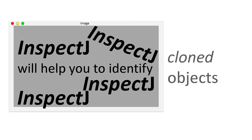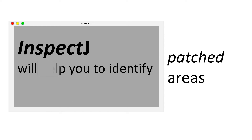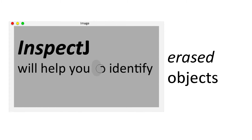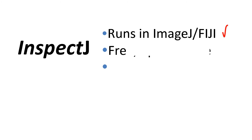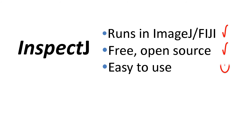InSpecJ will help you to identify stitched images, cloned objects, patched up areas, and erased objects. In other words, it will help you to assess digital image integrity. It runs in ImageJ or Fiji, the software is free and open source, and it's really easy to use.